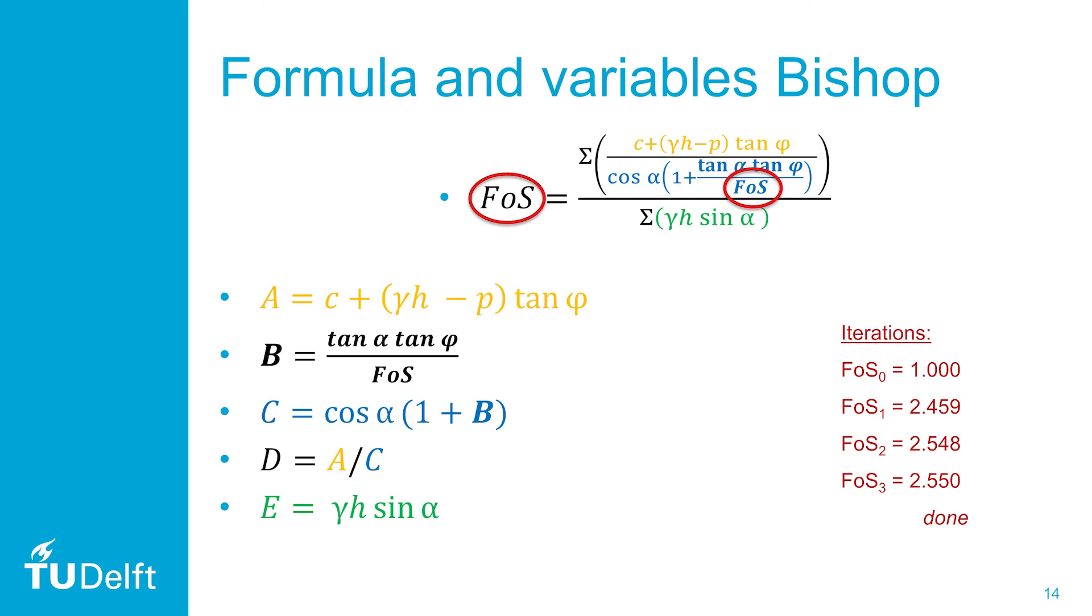To determine the solution, you need to iterate this formula, because the factor of safety is on both sides of the equation. You continue iterating until the factor of safety doesn't change significantly anymore after an iteration. Again, we split up the equation into convenient parts, and for each slice we determine the variables and put it in a table. When you start with factor of safety 1, the values for F, for the example of tutorial sheet 8, are 2.459, 2.548, and 2.550. When we notice the factor of safety doesn't change significantly anymore, we have our final answer.